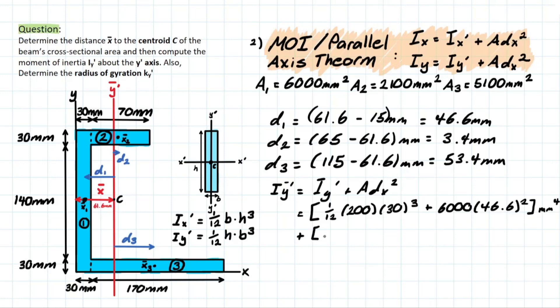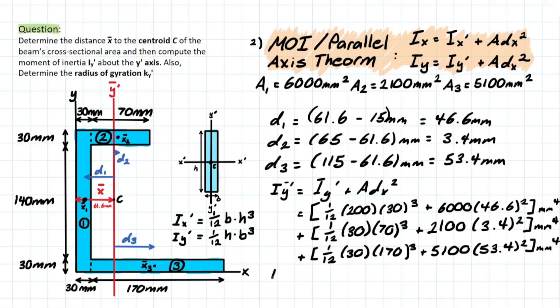And then we proceed similarly with each of the other shapes, which will leave us with a final value for moment of inertia about Y bar prime equal to 109.14 times 10 to the power of 6 millimeters to the 4th power.